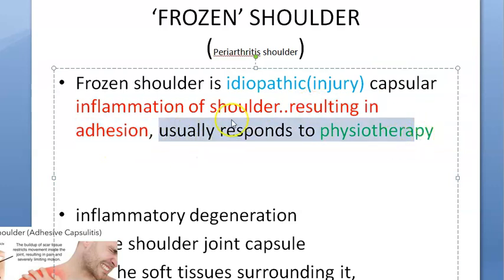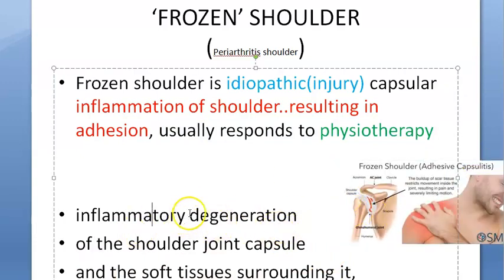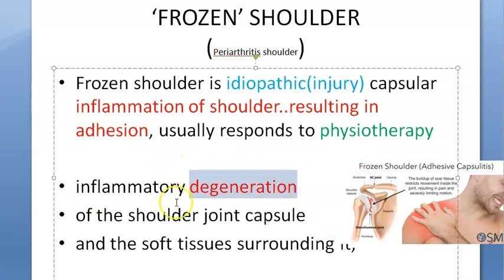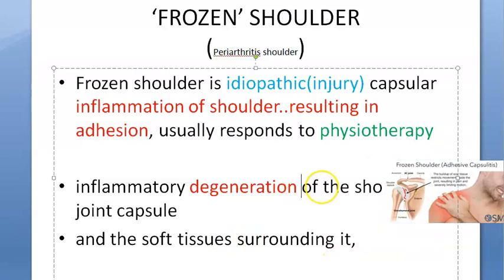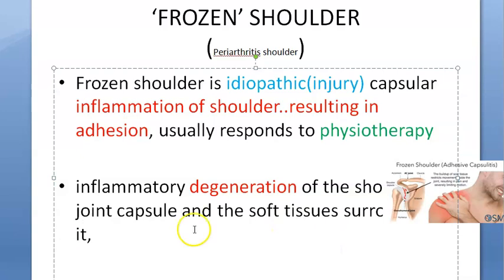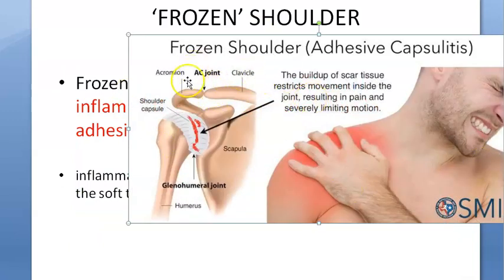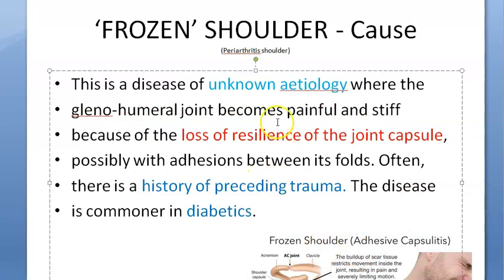This condition usually responds to physiotherapy, though some say it resolves by itself. However, the current belief is that treatment must be given. The inflammation causes degeneration of the shoulder joint capsule and the surrounding soft tissue. There is injury to the joint capsule and surrounding soft tissues, leading to adhesion. You can see in the diagram the buildup of scar tissue restricting movement inside the joint, resulting in pain and severely limiting motion.